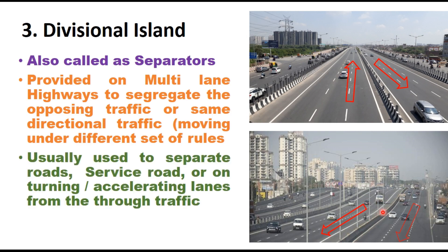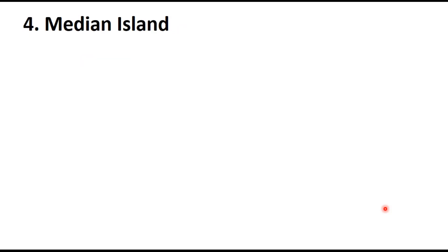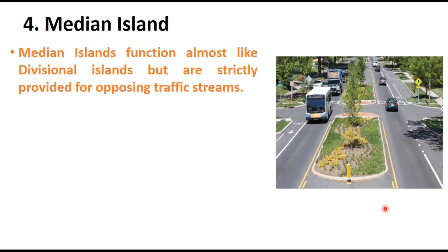Divisional islands are usually used to separate roads, service roads, or turning and acceleration lanes from the route traffic. Median islands are similar to divisional islands but are strictly provided for opposing traffic streams. These islands function almost like divisional islands but are specifically provided to separate opposing traffic to avoid head-on collisions.